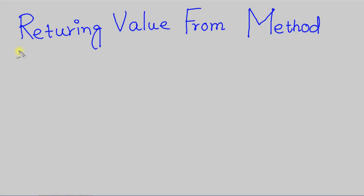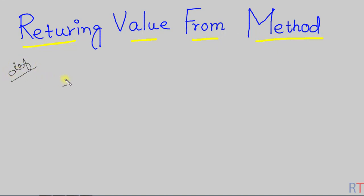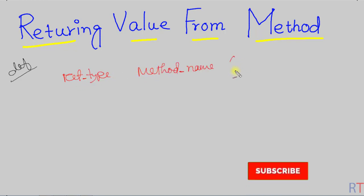Hey, what's up guys! In this video we're going to see how we can return one value from a method. The general method definition structure is: first we have the return type of the method, then the method name.